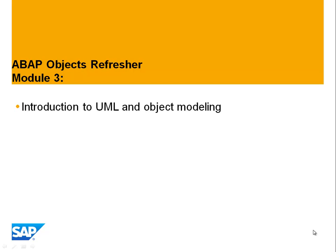Welcome back to the ABAP Objects Refresher. We're on Module 3 and we're talking about object modeling — how do you write down objects, classes, and relationships in diagrams. Specifically about UML, the Unified Modeling Language, which is now the notation that is uniform in all OO books and has superseded everything else that was there before.